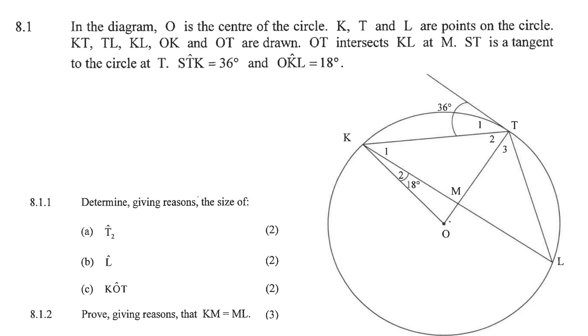In the diagram, O is the center of the circle. K, T, and L are points on the circle. ST is a tangent - that's important that we know that.